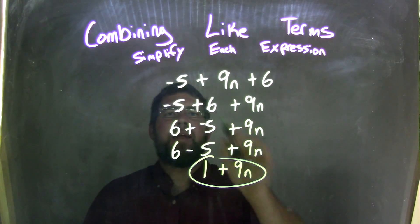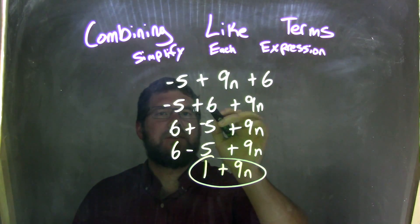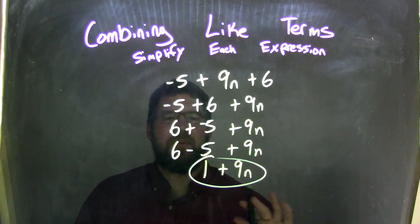So, let's recap. Negative 5 plus 9n plus 6. I use the commutative property to bring the 6 over here. So, we have negative 5 plus 6 plus 9n. And we still have all three terms. Fantastic.